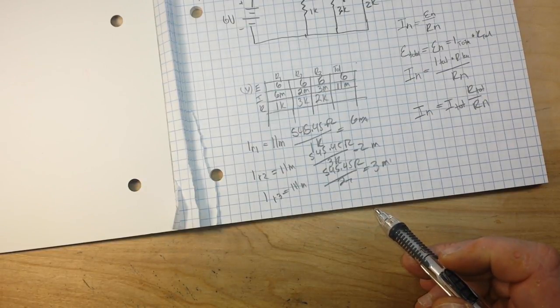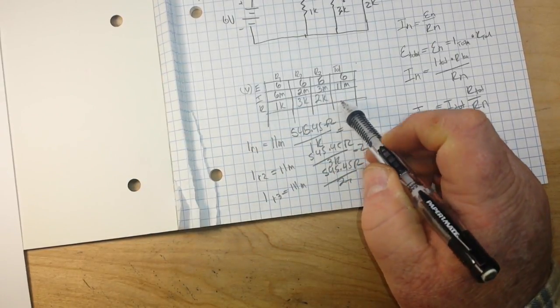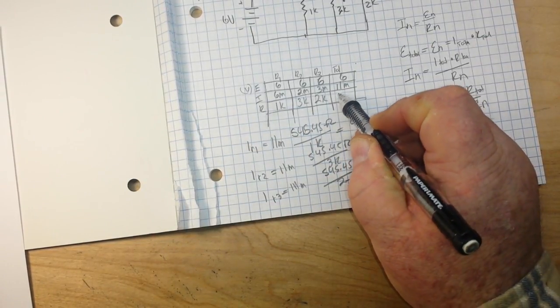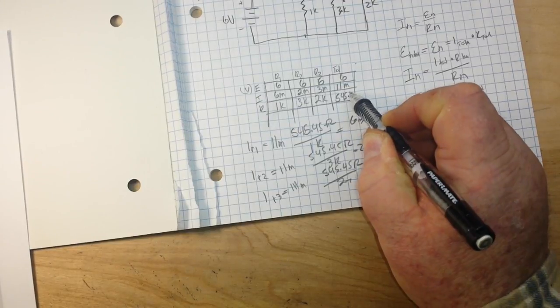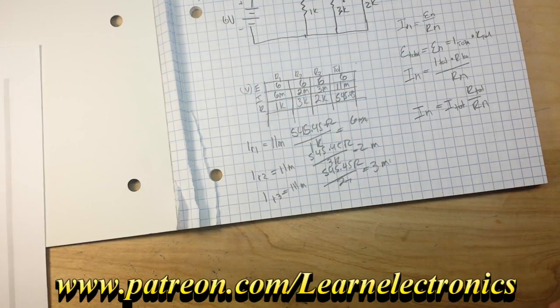So if we come and we bring it all back together, we can finally fill out our box here, and you see that it is 545.45. And that is the current divider formula. That is how you solve for parallel circuits.